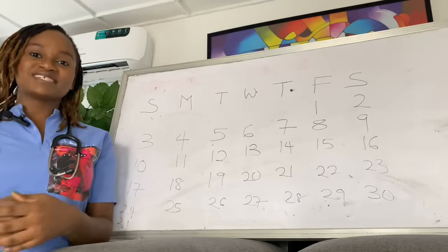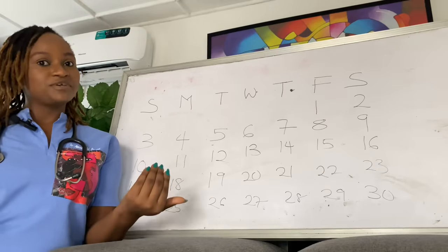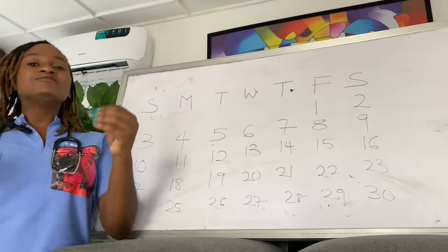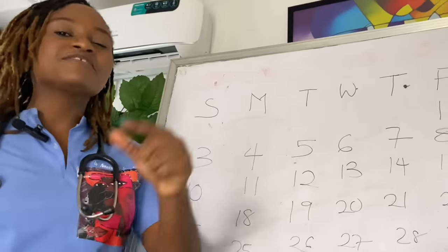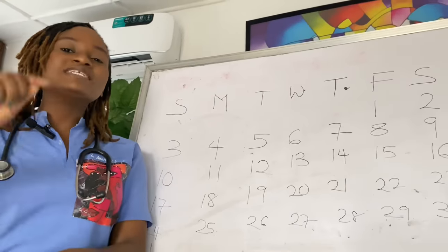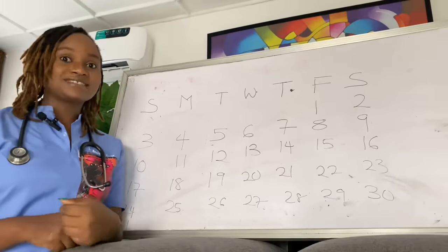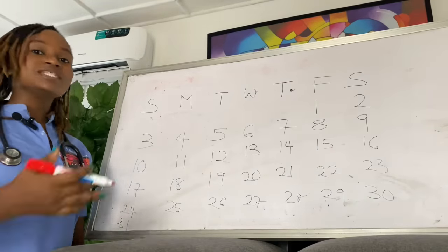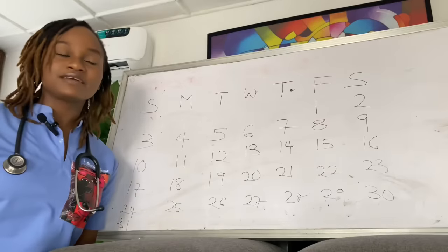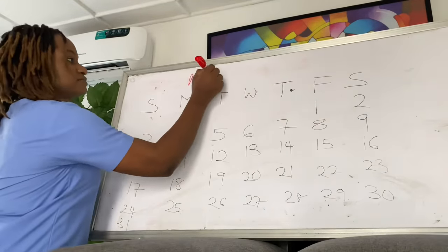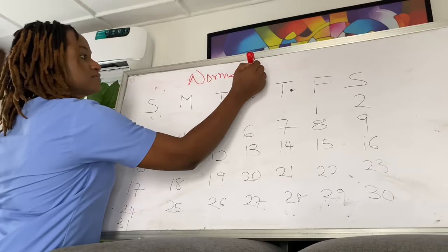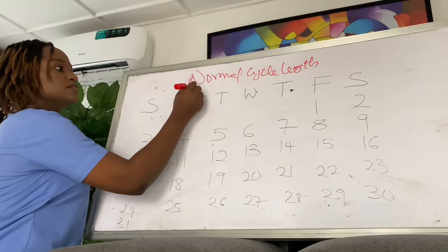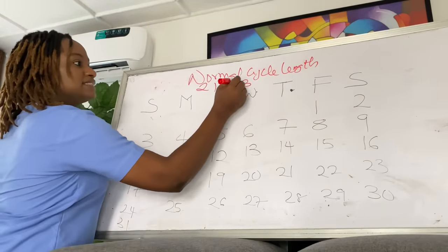To know your safe days and your fertile window, you must know your cycle length. Cycle length is not the number of days you see your period — it's not three, four, or five days. Cycle length is the number of days from the first day you see your period to the day before you see your next period. Every woman's cycle length is different: some have 21, 22, 28, 31, or even 35 day cycles. Your normal cycle length is between 21 and 35 days.